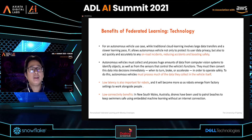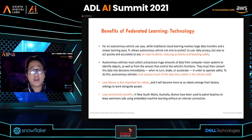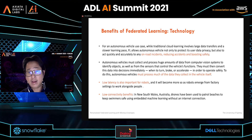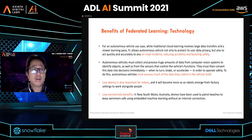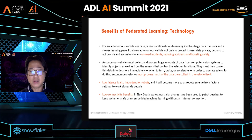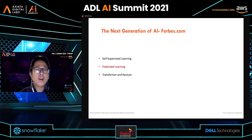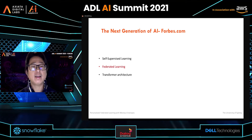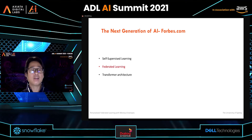Another benefit is in autonomous vehicles. Traditional cloud learning involves large data transfers and slower learning, but federated learning allows autonomous vehicles not only to protect user data privacy but also to act quickly and accurately on road incidents, reducing accidents and boosting safety. According to Forbes, the next generation of AI will concentrate on three technologies: self-supervised learning, federated learning, and transformer architecture.